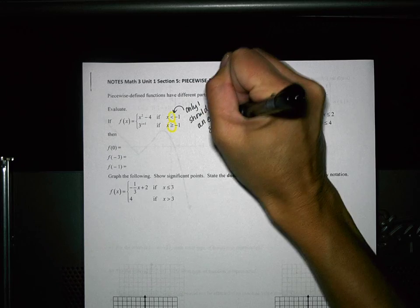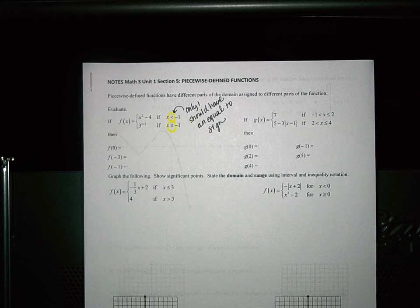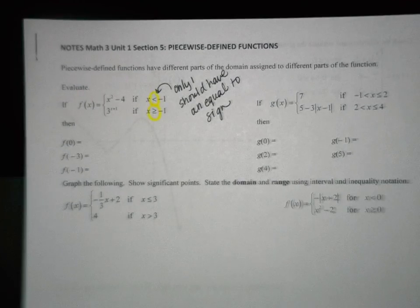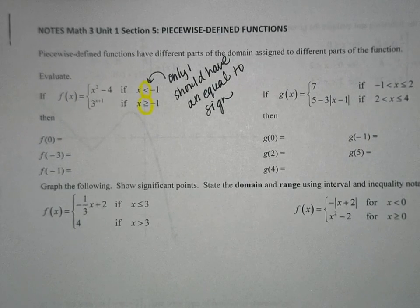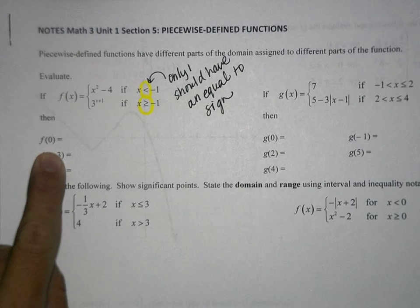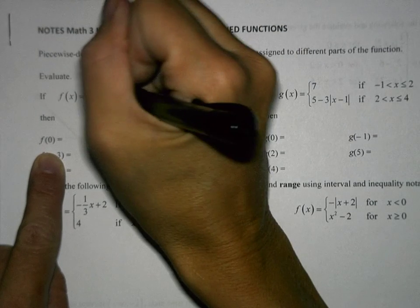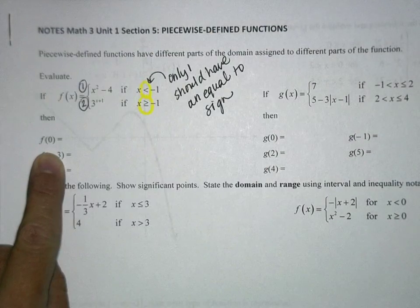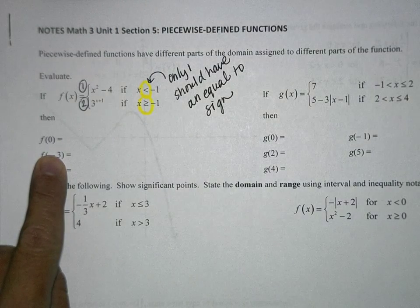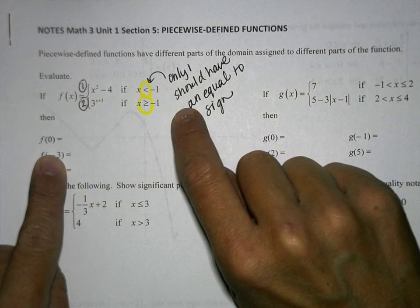Note that only one should have an equal to sign. This next question says find f of 0. The first thing you need to think about — I'm going to number these equations as equation 1 and equation 2. Which equation would have 0 in it? The second one, because 0 is greater than negative 1.